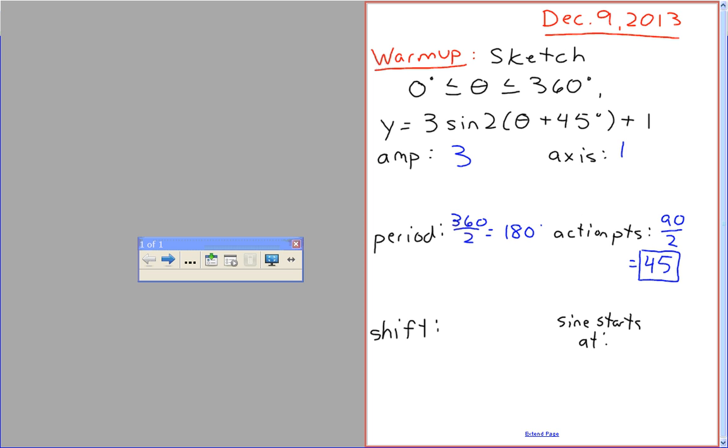Yeah, okay. Now, again, it's plus 45, so we're going to call this 45 degrees left. Remember, just like when we're doing transformations, everything inside the brackets is the opposite. So it says 45, it's a 45 degree shift left.